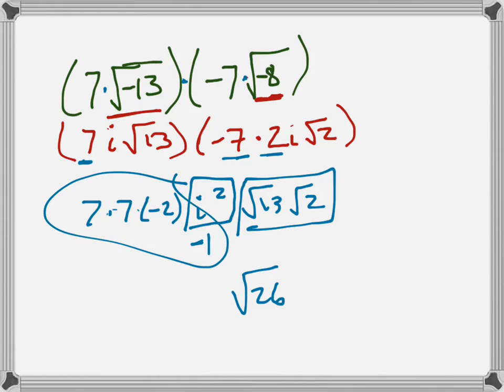Now let's just multiply these things together. 7 times 7 is 49. These become a positive 2. 49 times positive 2 is a positive 98. There's your answer.